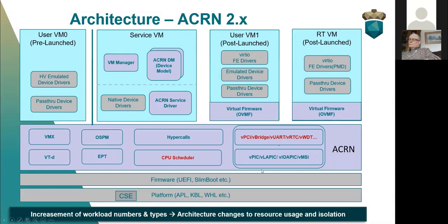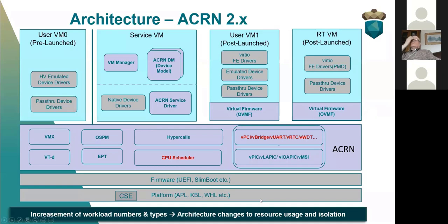Compared to ACRN 1.0, we have an increase in workload number and types. We now have pre-launched VMs, RT VMs, and safety VMs or secure VMs as pre-launched VM support. So for ACRN 2.0, we have architecture changes related to resource usage and isolation.